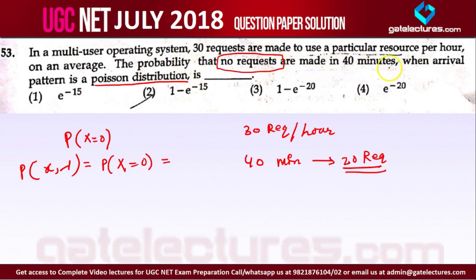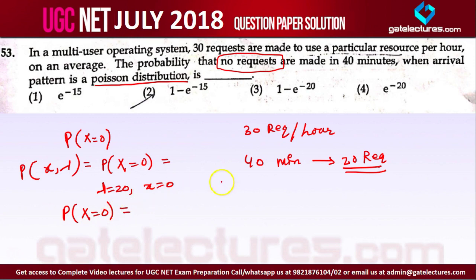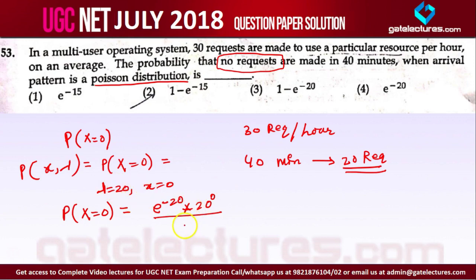The probability that no requests are made in 40 minutes when the arrival pattern is Poisson distribution: Lambda is 20 and x is 0. Applying the formula: e^(-λ) × λ^x / x! = e^(-20) × 20^0 / 0!. We know that 20^0 = 1 and 0! = 1. So the answer is e^(-20). The fourth option is the correct answer.